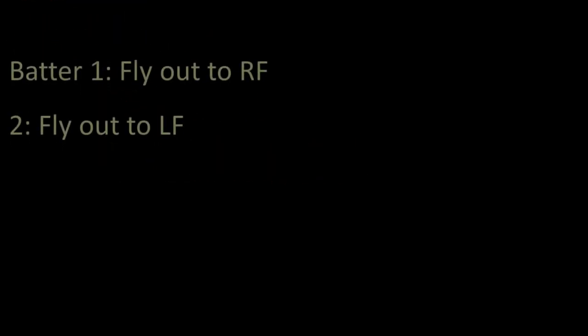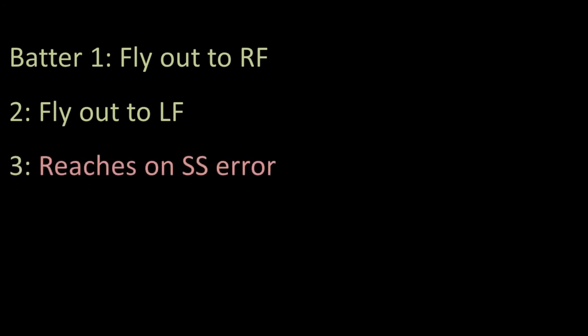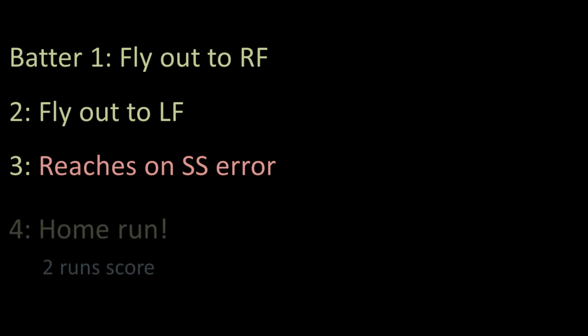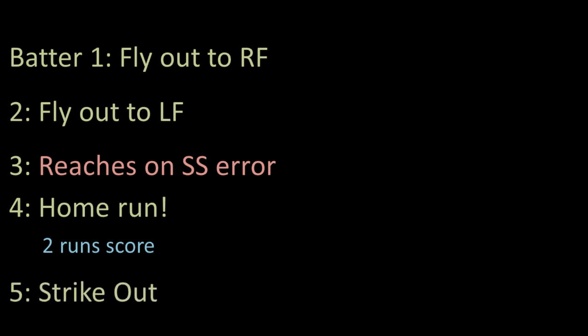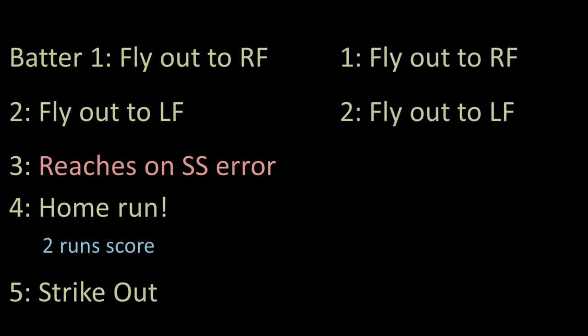For example, let's say the first two batters of our inning fly out and then a third hits a routine ground ball to the shortstop who commits an error and allows that batter to reach first base safely. The fourth batter then hits a home run and the two runs score. The next batter strikes out to end the inning. Our official scorer would then replay this inning as if the error had never happened. Our first two batters would have flown out and without the error, our third batter would have grounded out to the shortstop for the third out — and no runs would have scored. This means that those two runs that scored are unearned.